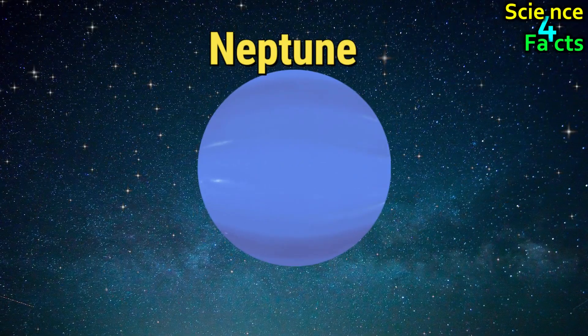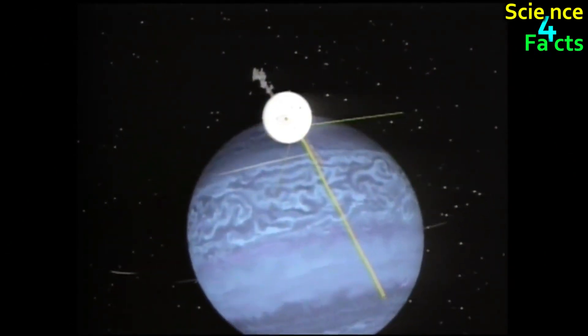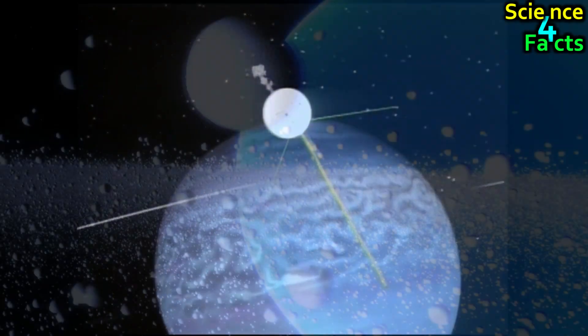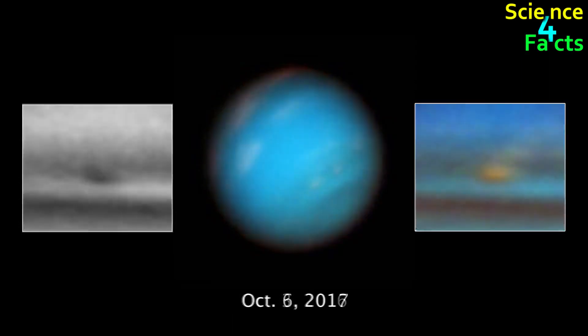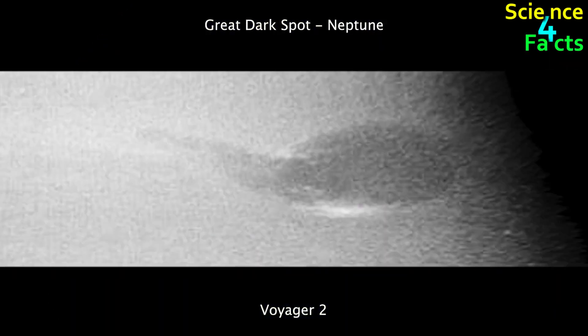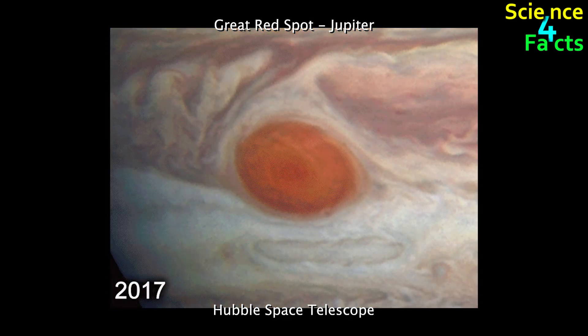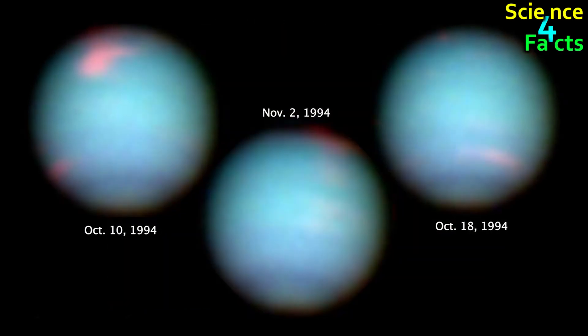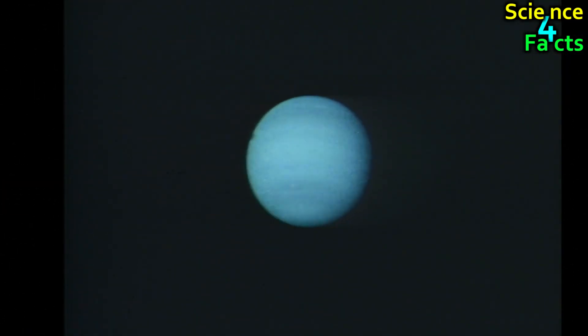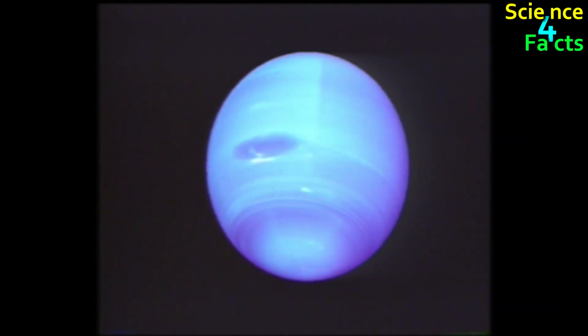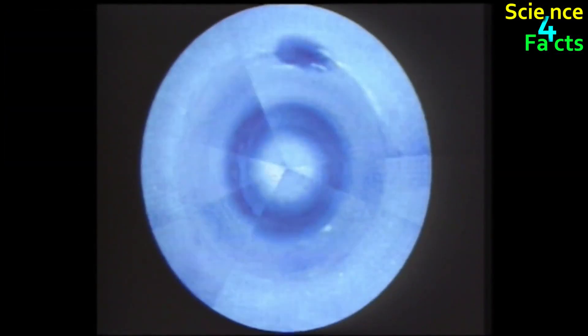Neptune, like Uranus, is an ice giant planet without a solid surface. Its atmosphere is made up of mostly hydrogen and helium, with trace amounts of methane which gives the planet its characteristic blue color. Neptune's atmosphere is characterized by bands of clouds, storms, and a massive anticyclonic storm known as the Great Dark Spot, which is similar in size and shape to Jupiter's Great Red Spot. However, unlike Jupiter's storm, the Great Dark Spot disappeared in the late 1990s and has not been seen since. In addition to the Great Dark Spot, Neptune's atmosphere is also home to several smaller storms, including a series of white clouds known as scooters due to their rapid motion across the planet's surface.